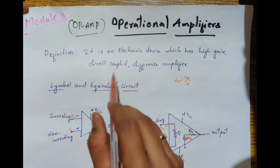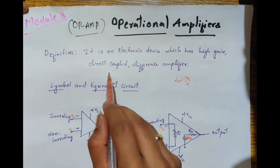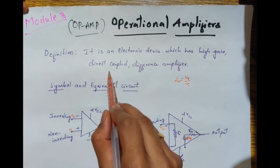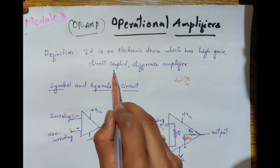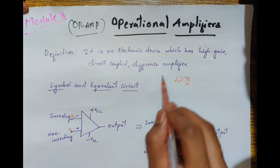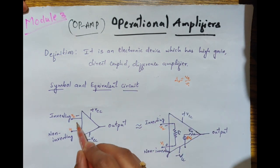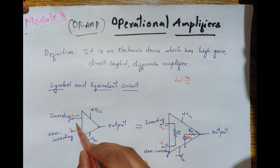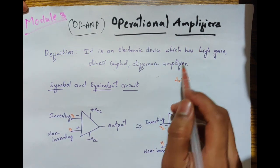Direct coupled refers to the fact that the operational amplifier can amplify DC signals, that is zero frequency signals. The difference amplifier means this operational amplifier has two input terminals, and the difference of those two input terminal voltages will be amplified.